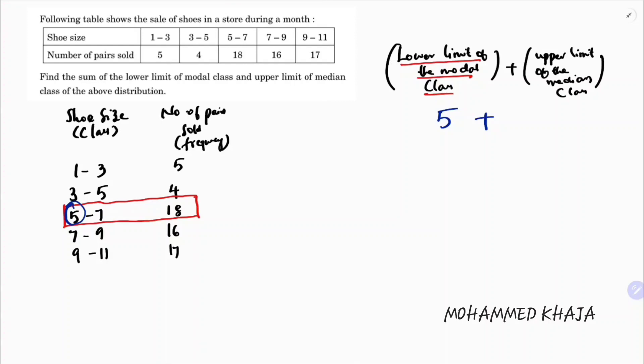Next, we need the upper limit of the median class. To calculate the median class, we need cumulative frequency. For cumulative frequency, first we write 5.